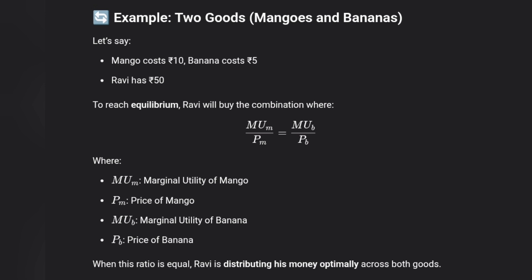MU/P represents the marginal utility of mangoes and bananas divided by their respective prices. When this ratio is equal for both goods, Ravi is distributing his money optimally across both goods.